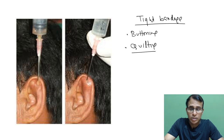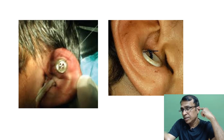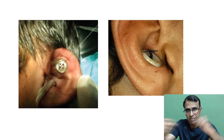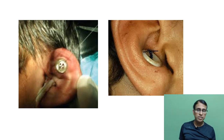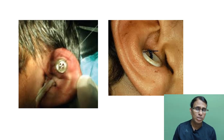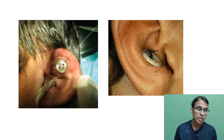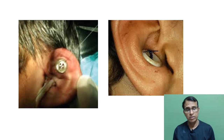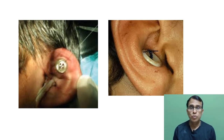Buttoning involves taking two buttons — one on the lateral side of the area and one medially — passing a suture between the two, and tying them tightly. The buttons apply constant pressure in that area. Buttons must be on both sides because without them, a tight suture will cut through the skin and cartilage. In the image, you can see the suture being tied with buttons applied. Multiple sutures are used to ensure sufficient pressure to prevent re-collection of fluid.